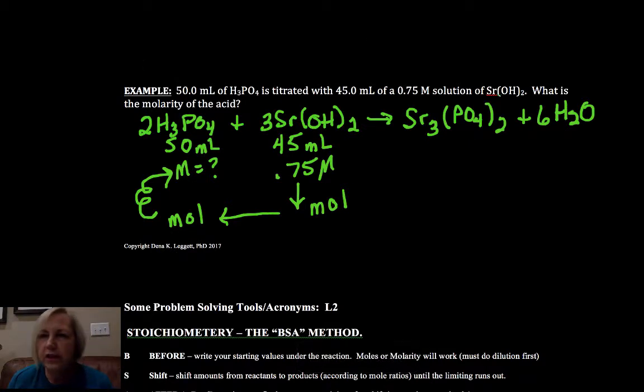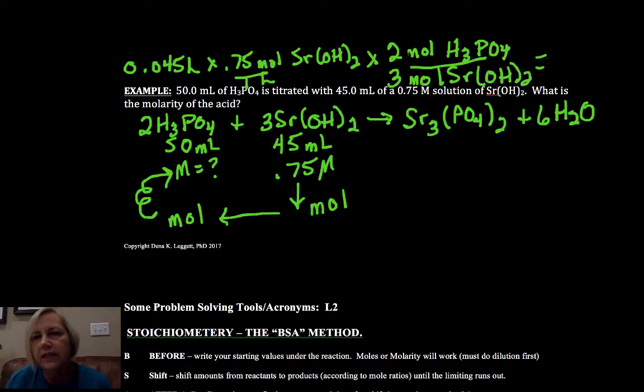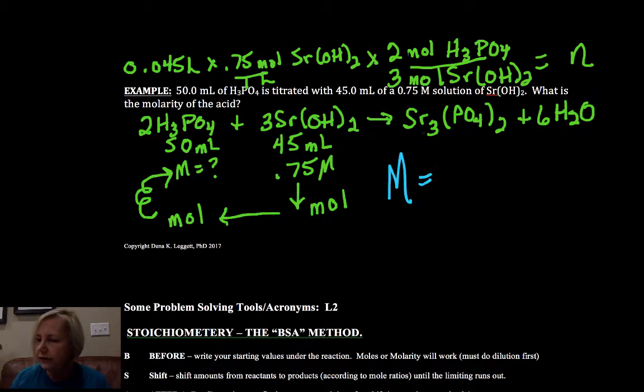I'm going to take a quick... not show all of my work there. You should be able to do this, but be careful. I have kiddos do this all the time and go the wrong direction: times 0.75 moles per one liter of the strontium hydroxide. Now this time it's three moles of H3PO4 for every... excuse me, it's backwards, sorry about that. That's two to three, two to three moles of strontium hydroxide.